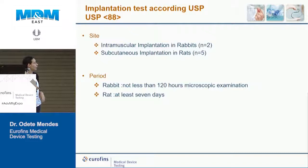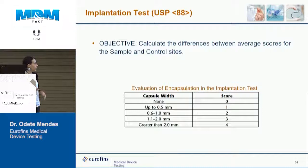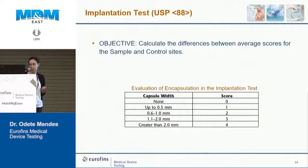The USP guideline for implantation is simpler: implantation is performed intramuscularly in at least 2 rabbits and subcutaneously in 5 rats. Duration is not less than 120 hours in rabbits and at least 7 days in rats. Evaluation compares the test device to a control site, measuring the width of the fibrous capsule that forms around the implant, and a score is assigned based on that measurement.